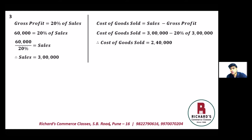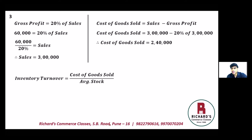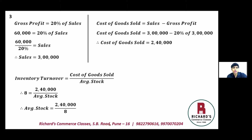Now we can use the formula for inventory turnover, which is cost of goods sold divided by average stock. Cost of goods sold is known, and inventory turnover ratio is 8 times. So 8 equals two lakh forty thousand divided by average stock. Therefore average stock equals two lakh forty thousand divided by 8, which gives us stock equal to thirty thousand.